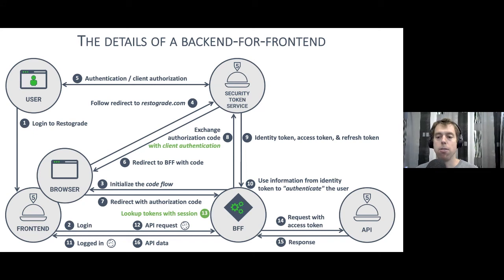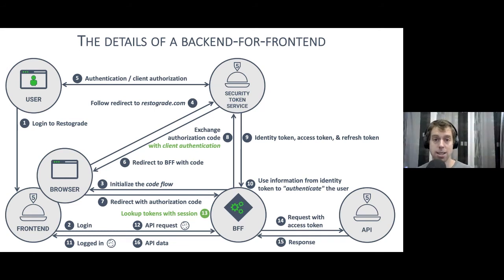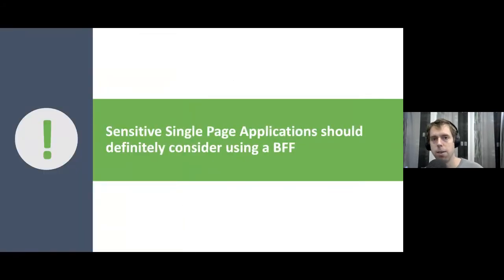The BFF backend has no business logic — it just forwards calls to APIs with tokens. That's maybe not even a hundred lines of code. But with that, you get much better security properties: tokens stay out of the browser, sensitive information is hidden, and you have control over which requests are allowed. Sensitive front-end applications should consider using a BFF. In my opinion, this is the only proper way of implementing a single page application with sensitive features.